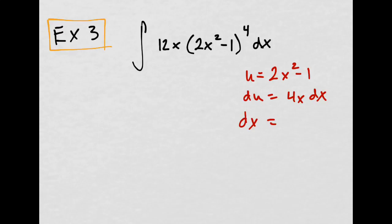So u will be 2x squared minus 1. Then du is 4x dx. I solve for dx all in my head. 1 over 4x du. You just take the reciprocal of it. Then I have the integral 12x times u to the fourth. And then substitute my dx.